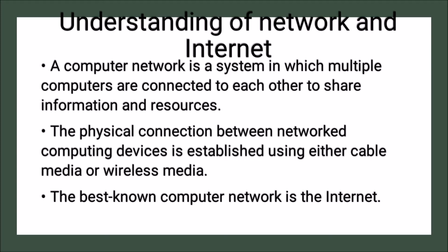A computer network is a system in which multiple computers — more than one — are connected to each other to share information and resources. So basically, the main goal is to share information and resources. This is the reason many computers are connected together, forming a computer network — a network of computers for sharing information and resources.